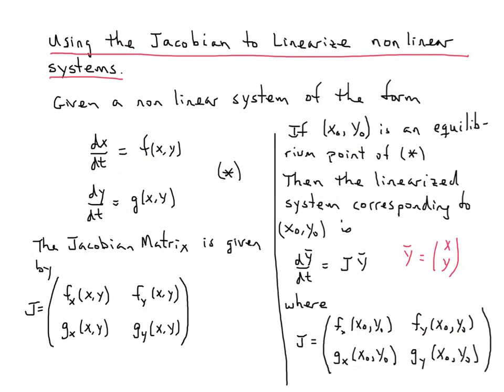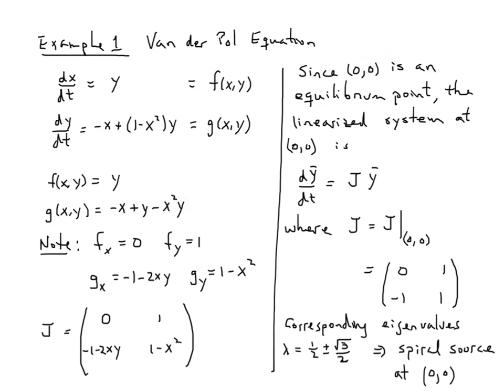So let me show you the three examples that I started with yesterday and show you how we use this Jacobian to do the linearization in one uniform, consistent way. Example 1 that I showed in class worked with the Van der Pol equation. Here it is in its nonlinear form, f(x,y) and g(x,y) are given like this.